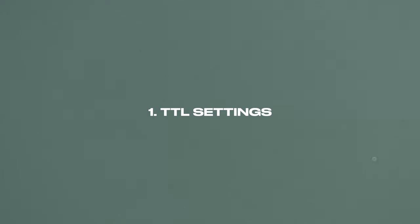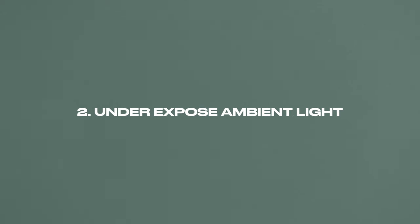So what are these three easy steps? Number one is TTL settings. Number two is underexpose the ambient light. And number three is flash zoom. Let's get into what all of these mean.